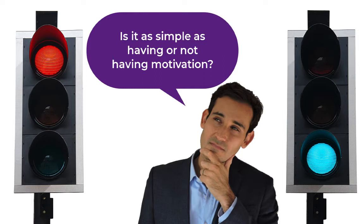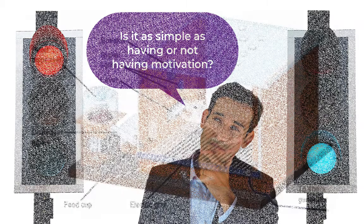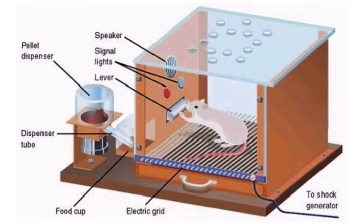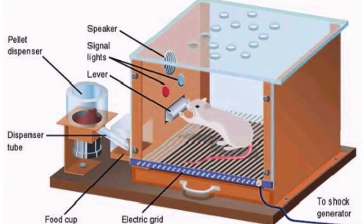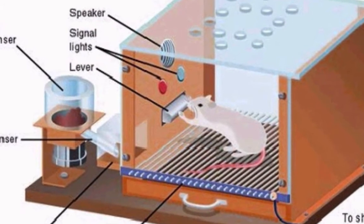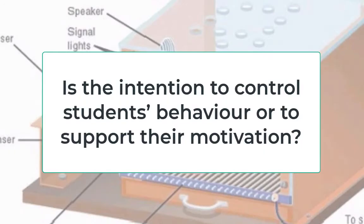The traditional model by which motivation has been understood is a behaviorist one, and it resembles the Skinner Box, where the subject performs an action to obtain food or to avoid an unpleasant electric discharge. This means that the subject is engaging to obtain some sort of reward or to avoid punishment, and if we apply this to how we support students' motivation, we may start seeing this much more like controlling a student's behavior rather than supporting their motivation.